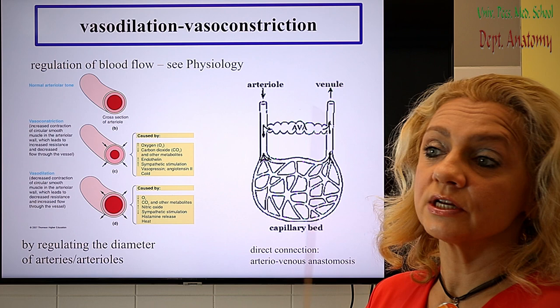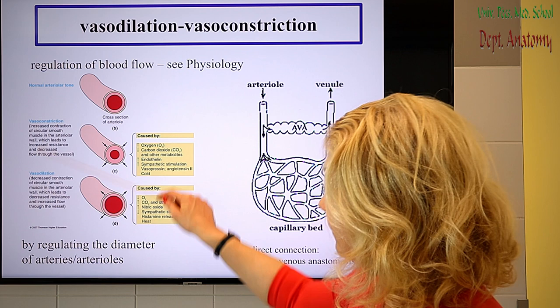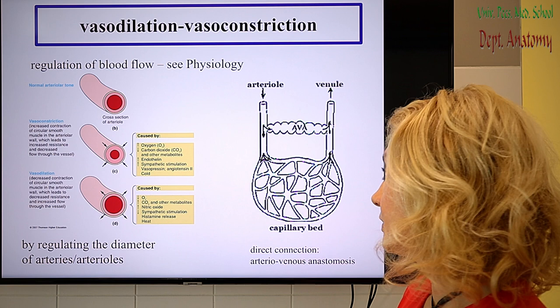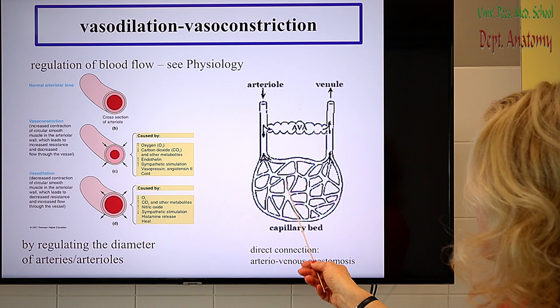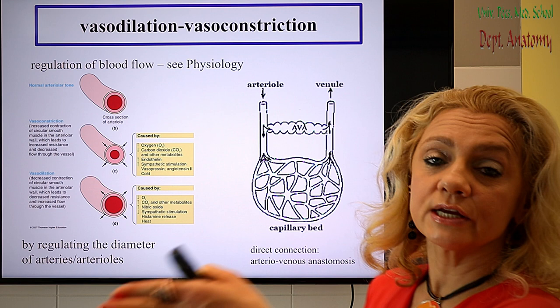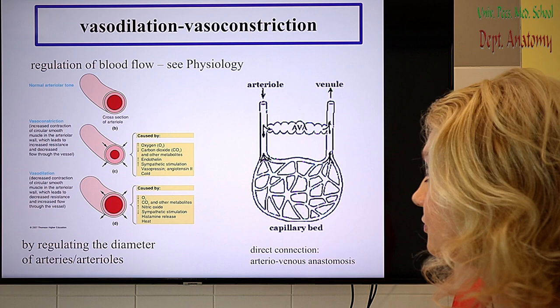Vasodilation and vasoconstriction — the dilation and constriction of vessels — are determined by many factors that you will learn in physiology and pathophysiology in detail. Then we go to the capillary section, which is basically the root connection between arterioles and venules. But in some places there can be a direct connection between arterioles and venules, called arteriovenous anastomosis.